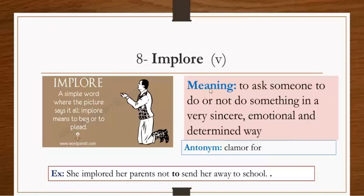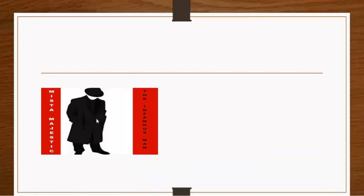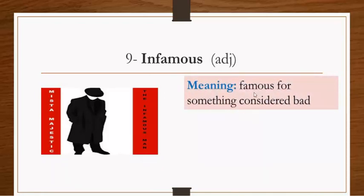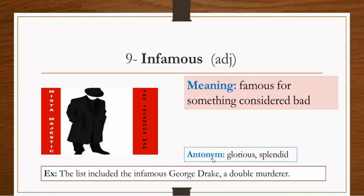From this picture, you can see a man looking down who is vague for us. He's not clear, we don't know his identity. This word is infamous. Infamous means famous for something considered bad. Like notorious, which we studied in Unit 10, it means famous for bad actions, for crimes. The antonym is glorious or splendid, something amazing or famous for good. Example: The list included the infamous George Drake, a criminal, a double murderer. This is a negative term modifying George Drake.